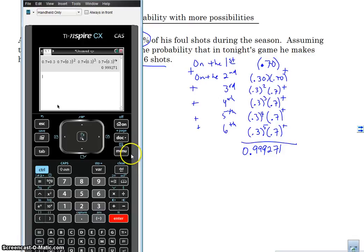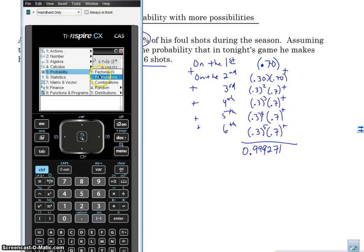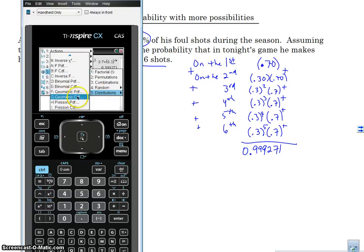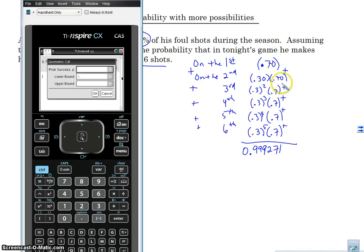And what we're going to do is we're going to do menu, probability, distributions, and we're going to go to geometric CDF. CDF, I think means cumulative, that's what I kind of think, I usually, that's the way I remember it. And the reason I remember it is cumulative because it's cumulative, it adds all of the ones up from one to six in this case.